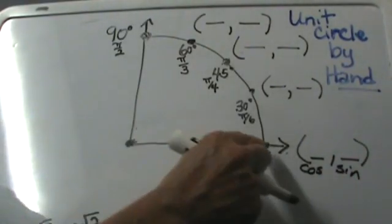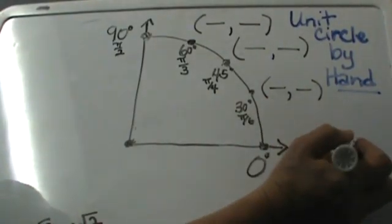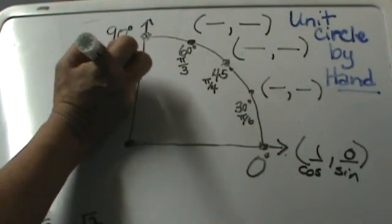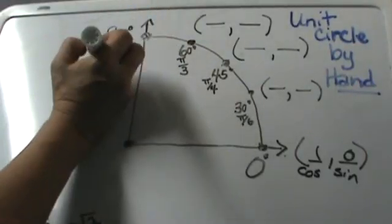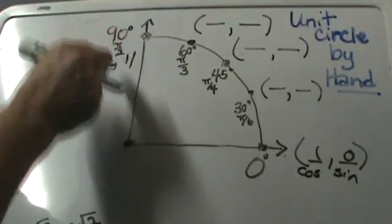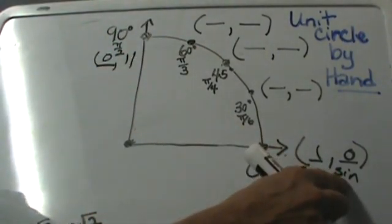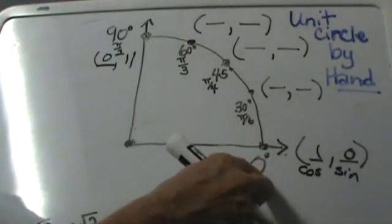For this one our point is the point (1,0) and up here our point is (0,1). So cosine is 0 at 90 and sine is 1 at 90. Cosine is 1 at 0 and sine is 0 at 0.